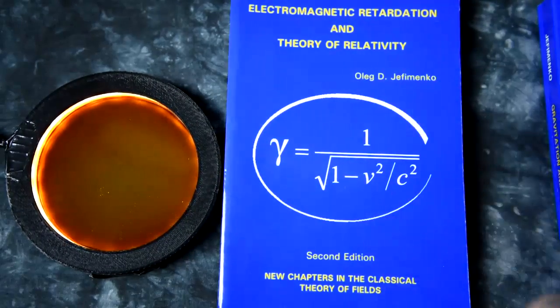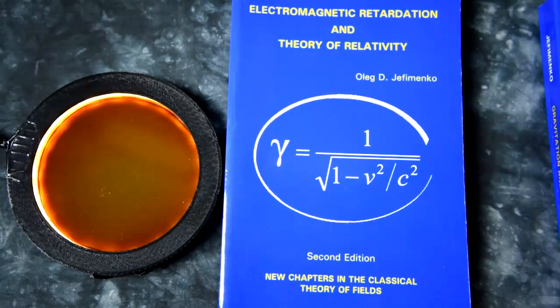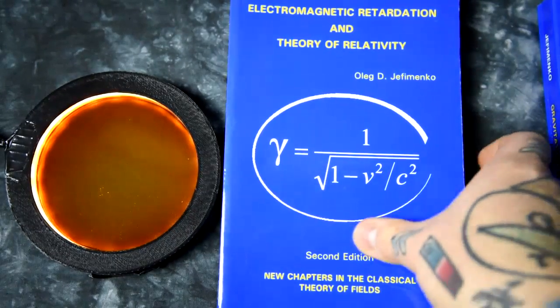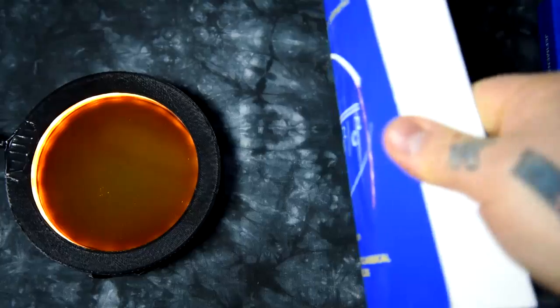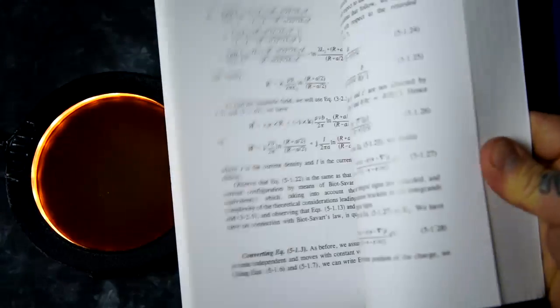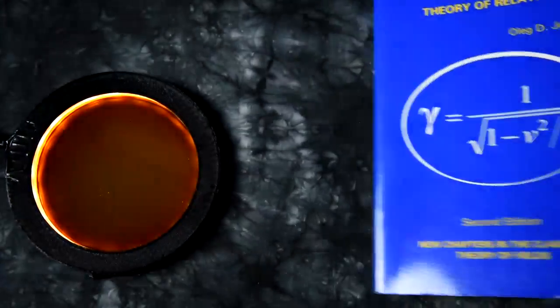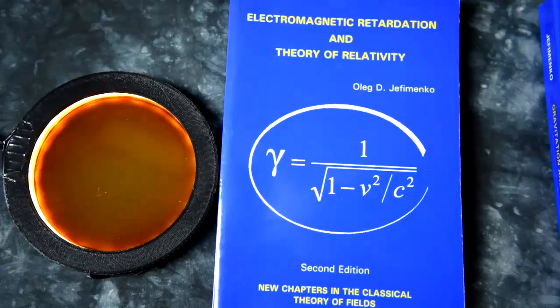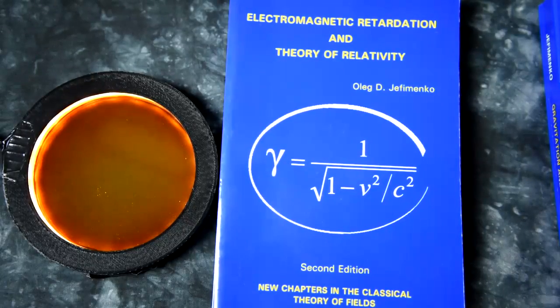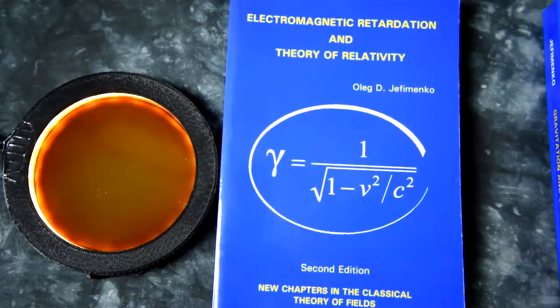This guy, by the way, Dr. Oleg Jefimenko, recently passed away. Multiple PhDs. He was a hardcore critic. This was a professor, endless math in this book, a hardcore critic of relativity. The proof that, for example, like GPS satellite correction has anything to do with proving relativity, he disproved that.